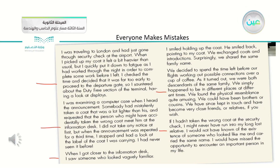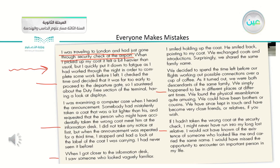Now, in the first paragraph, as you are going to write your own story, we have the settings: time and place. He mentioned the place: 'I was traveling to London and had just gone through security check at the airport.' So we have a particular place, which is an airport, and he was talking about his feelings and his situation at that time. 'I quickly put it down to fatigue as I had worked through the night in order to complete some work before I left.' He's talking about what he was feeling at that time, and he talked about the place and the time.